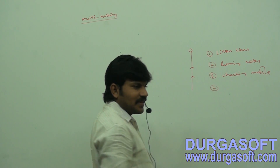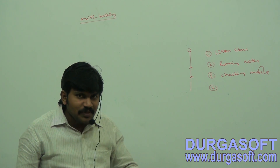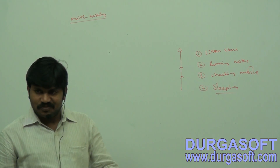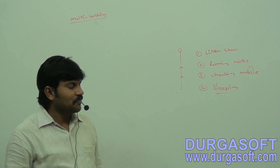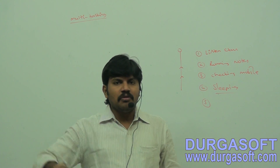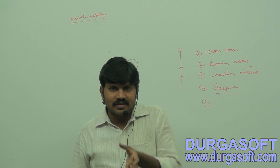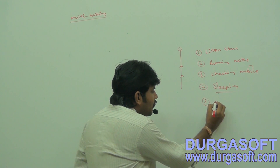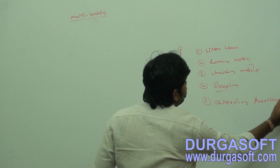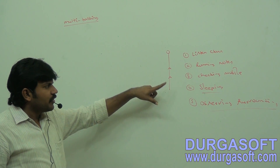Some people may even have a chance to sleep in the classroom — sleeping is a very common activity. While doing all these activities, there may be a chance that a very cute lady enters the class and all the students' heads turn 60 or 90 degrees — observing surroundings.